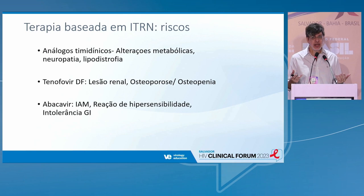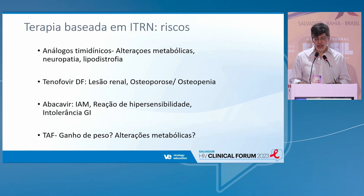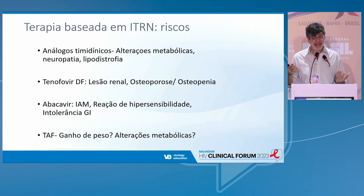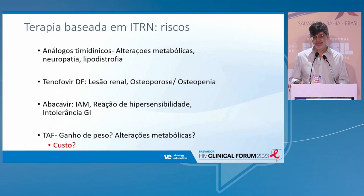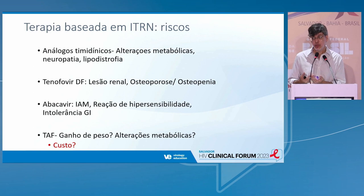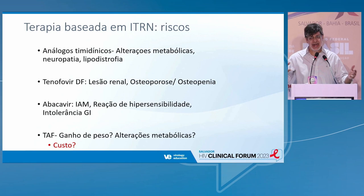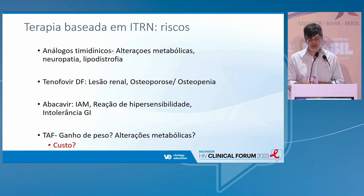This brought another question: since antiretrovirals were developed with higher barrier and higher power, would we really need such a high number of drugs? Tenofovir alafenamide (TAF) would also be a solution, but there are some issues — weight gain, possible metabolic alterations. The cost of TAF is important if we think about antiretroviral regimens that can be broadly prescribed and accessible to the whole population. Cost cannot be an issue when the drug demonstrates clear benefit, but if there is no clear benefit, we must consider both cost and potential adverse effects.